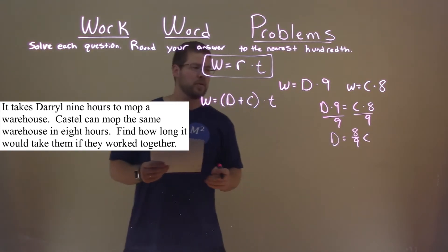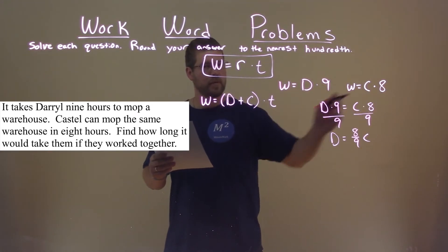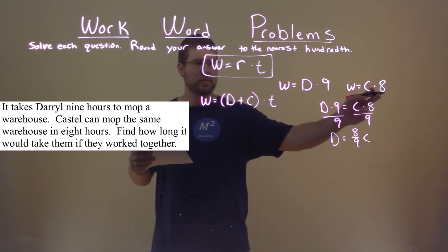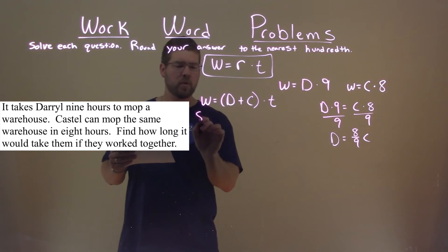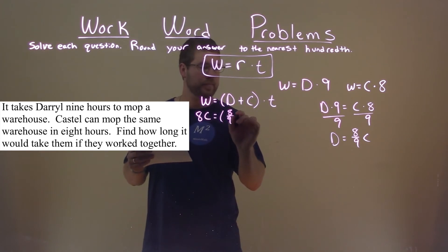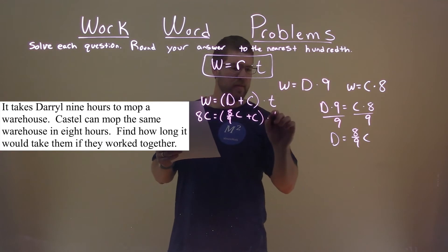So, now we're going to plug that into this equation. The work done is equal to Castle's rate times time, which is eight C. Daryl's work rate is equal to eight ninths of Castle's. We add Castle's rate and then multiply that by time.